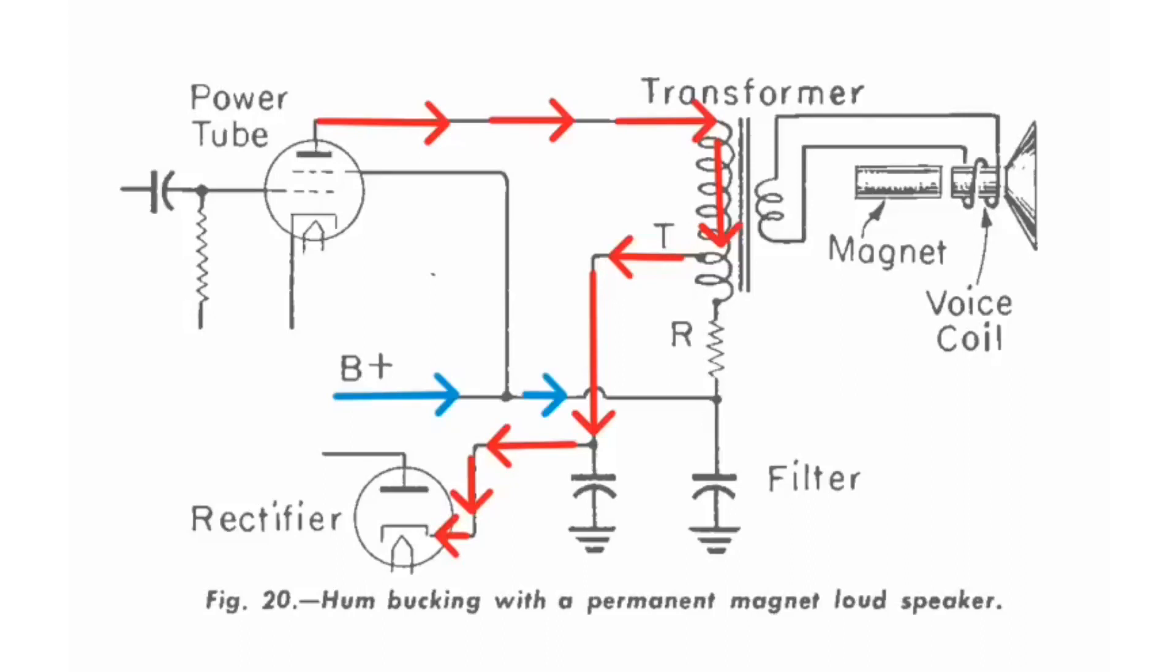You can see electrons start flowing through that lower half of the output transformer primary. They make their way through the resistor R15, in our case, then go through a coil which is nothing more than a choke.